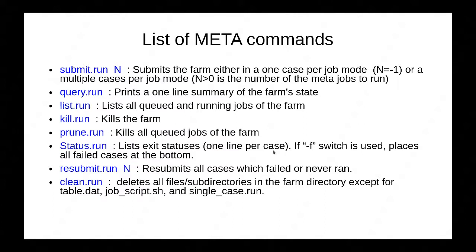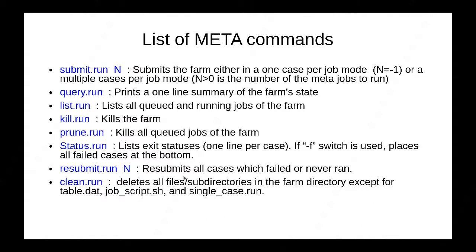You run status.run once some or all jobs have already run. By default it is sorted by case ID, but if you use the -f switch, it will place all failed cases with non-zero exit status at the bottom — making it much easier to detect failed cases. A very powerful command is resubmit.run, which takes the same argument N as submit.run. After you run your farm, you run this command and it finds all the cases which either failed or never ran, and submits them as a new farm. Finally, if you want to return your farming directory to the original state, you use clean.run — it deletes all files and subdirectories created in your farm directory except for the original files: table.dat, job_script.sh, and single_case_run.